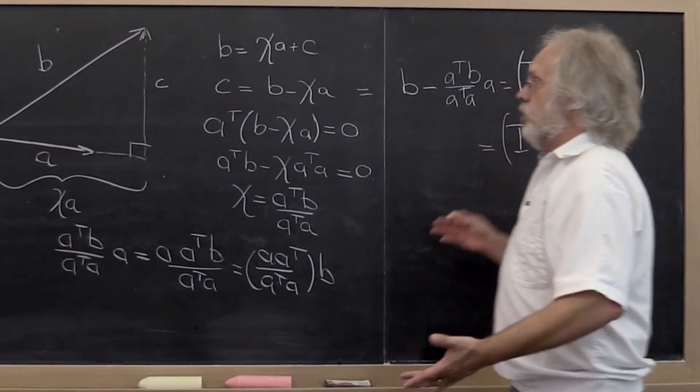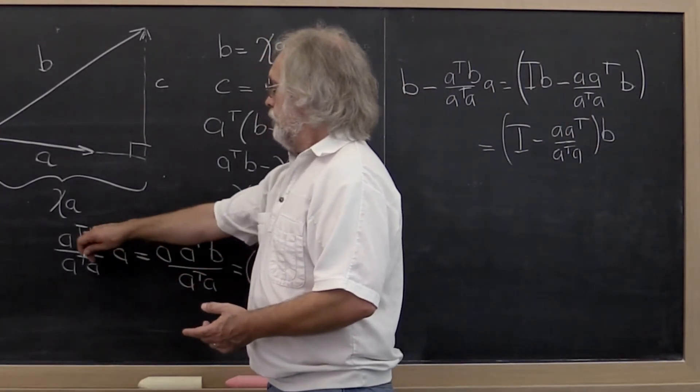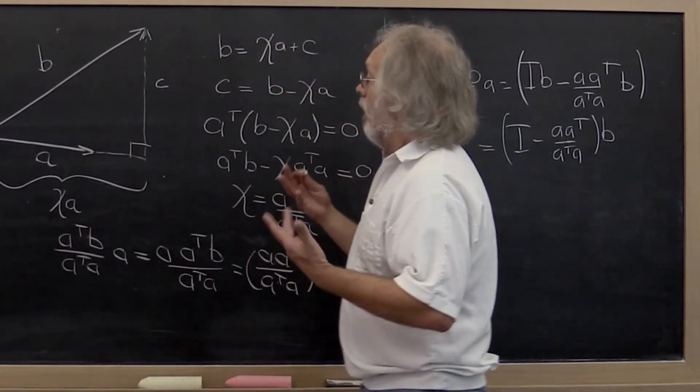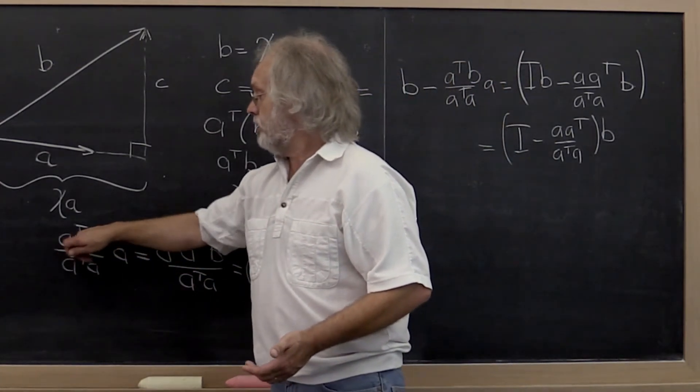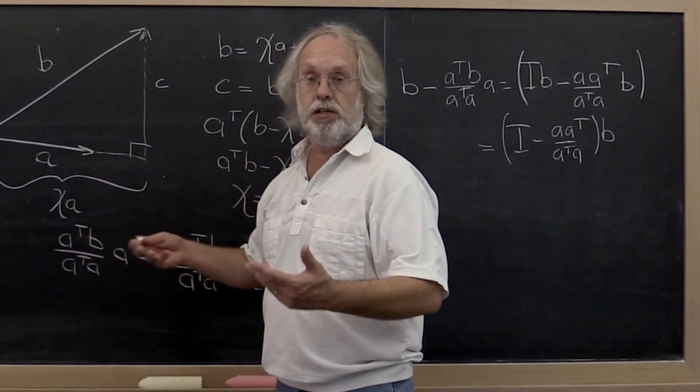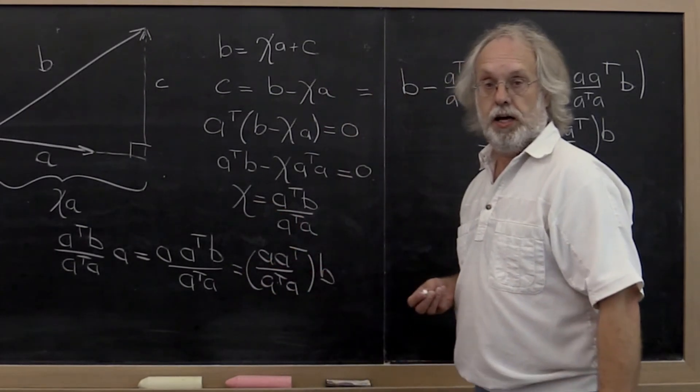Now all of this works too if the vectors A and B are complex valued, except that then every time you take a dot product, you need to take the Hermitian dot product. But the story is the same.